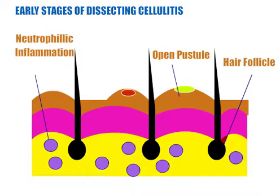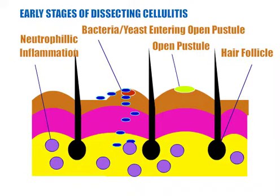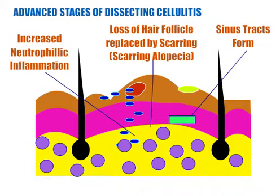In the early stages of dissecting cellulitis, there is neutrophilic inflammation that occurs, which leads to open pustules and bleeding of the skin. These openings allow bacteria and yeast to enter into the pustules. This causes advanced stages, which increase neutrophilic inflammation, lead to loss of hair follicles replaced by scarring, and form sinus tracts to connect bumps together.